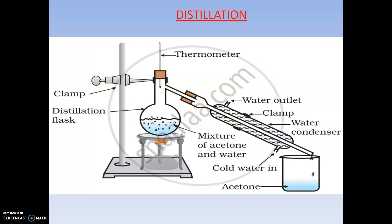Next is distillation — a very important topic to understand and learn thoroughly. Distillation is the method of getting a pure liquid from a solution by evaporating it and then condensing the vapors. In this process you get pure liquid. The solution is heated using a Bunsen burner in a round-bottom flask, and at a particular temperature it starts evaporating.